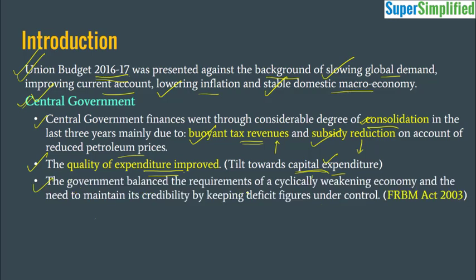The government balanced the requirements of a cyclically weakening economy with the need to maintain credibility by keeping deficit figures under control. It has to provide stimulus to a slowing economy by increasing expenditure and investment, but cannot spend so much that deficit figures go out of control — because the FRBM Act (Fiscal Responsibility and Budget Management Act), introduced in 2003, gives the government a fiscal deficit figure it must stick to. It has to balance FRBM compulsions to keep deficit figures low while managing a slowing economy.